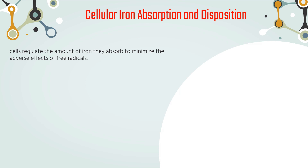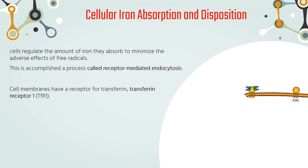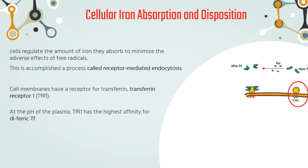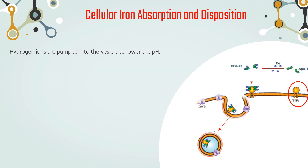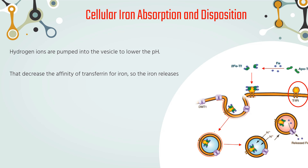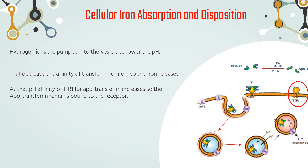Individual cells regulate the amount of iron they absorb to minimize the adverse effects of free radicals. This is accomplished by relying on an iron-specific carrier to move it into the cell by a process called receptor-mediated endocytosis. Cell membranes possess a receptor for transferrin, transferrin receptor 1. At the pH of the plasma, transferrin receptor 1 has the highest affinity for diferric transferrin. Once diferric transferrin binds transferrin receptor 1, the membrane begins to invaginate until it pinches off a vesicle inside the cytoplasm called an endosome. Hydrogen ions are pumped into the vesicle to lower the pH, which decreases the affinity of transferrin for iron, so the iron releases.